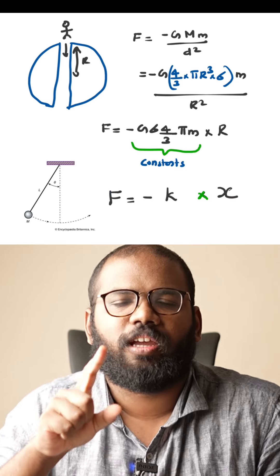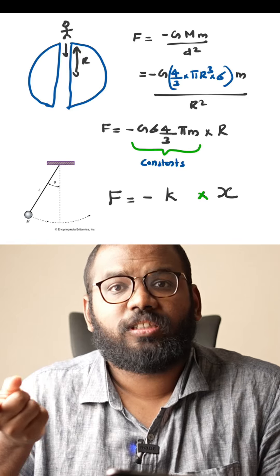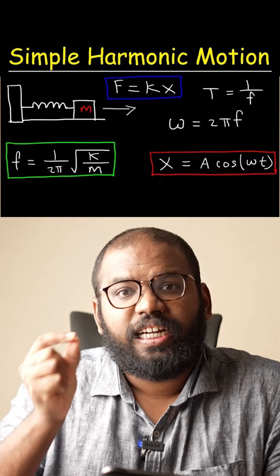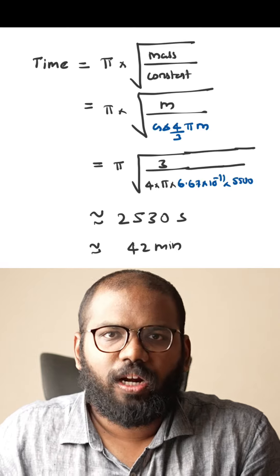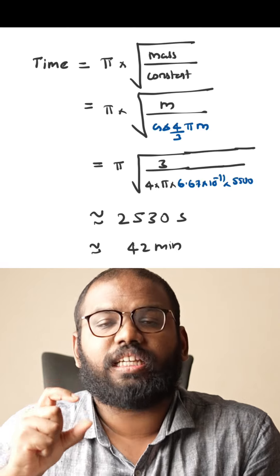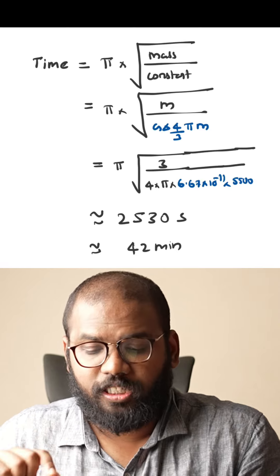Then this is simple. Fe is minus kx. Then in simple harmonic motion, we can write the time period. In that mass, the time is pi into the root of mass by constant.